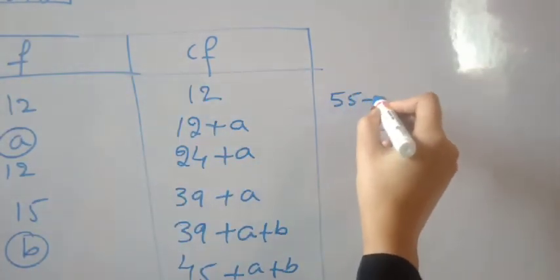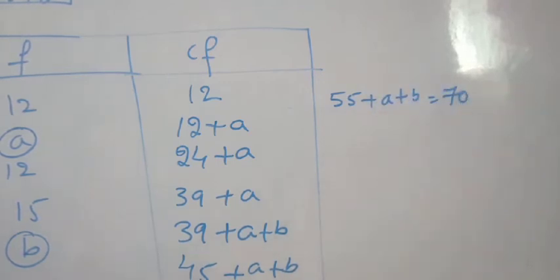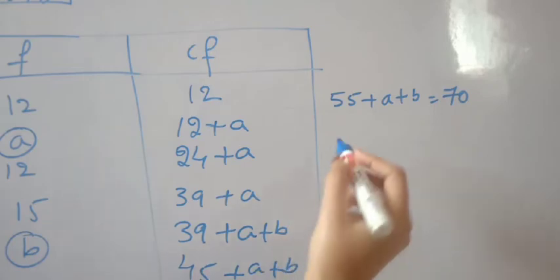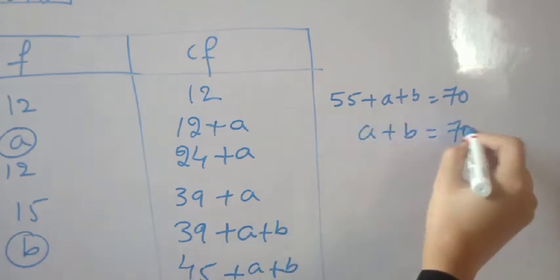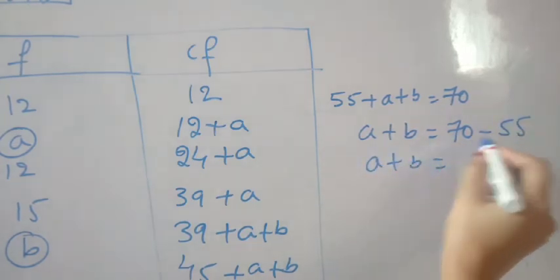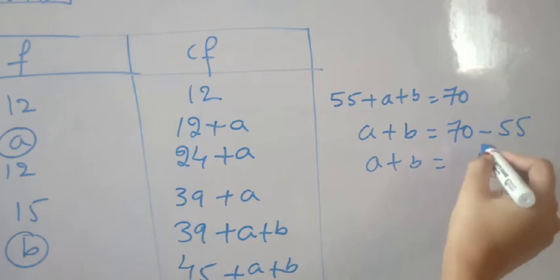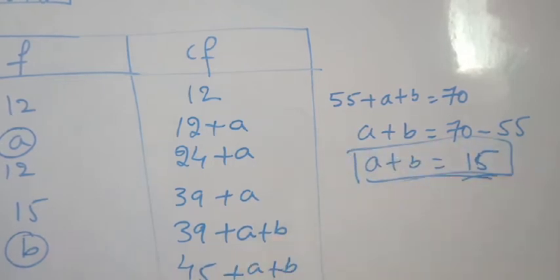Therefore, 55+A+B = 70, which gives A+B = 70-55 = 15. This is equation 1.